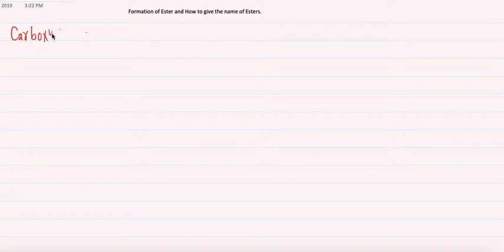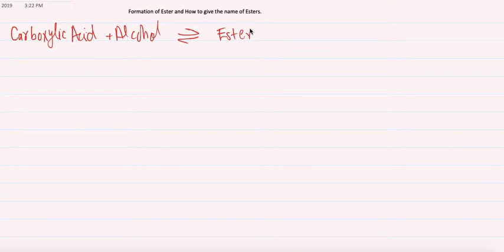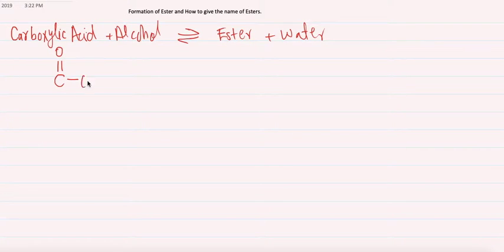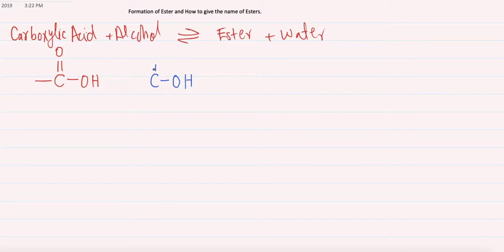For the formation of ester, the first reactant is carboxylic acid plus alcohol, which will produce ester and water. The functional group in carboxylic acid is C double bond O and OH. The functional group of alcohol is when carbon is directly attached with OH.